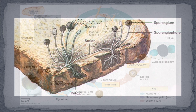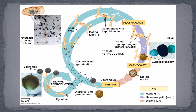Zygomycetes can reproduce both sexually and asexually. Asexually, haploid spores released from the sporangia can grow into new hyphae. Sexual reproduction occurs when two hyphae from different mating types come together to form gametangia, which are structures that produce gametes. The haploid gametes fuse with the opposite mating type to form diploid zygotes. When a thick wall grows around the nuclei, a zygospore is formed. When sufficient growing conditions are reached, the zygospore germinates, undergoes meiosis, and forms a hypha, which then grows into a sporangium, producing new combinations of genetic information.